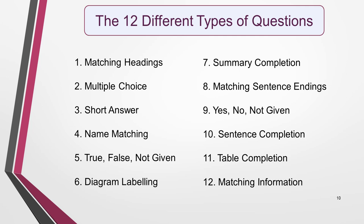One of the most challenging aspects of the reading test is the variety of different types of questions. There are 12 in all, designed to test a wide range of reading skills. You won't get them all in your test, but do expect 3 or 4 types of questions from this list. I cover each one in detail on the website, including step-by-step strategies to answer them and sample questions. You'll find a link to these pages in the notes below this video. There are also videos explaining each question type on my YouTube channel.